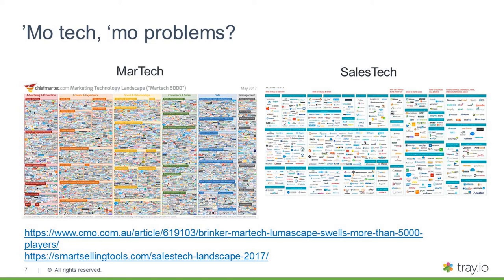Once your stack gets beyond two or three components, it starts to become unwieldy to manage. A couple of companies ago I was in a board meeting and was asked a simple question: how are those paid search leads converting in the revenue funnel? It was harder to answer than I'd like to admit, partly because I was managing a marketing org with 15 different tools — half integrated, half not. It's really hard to trace the customer journey across all these tools and understand what's moving the needle.